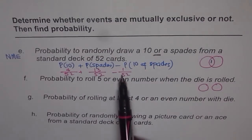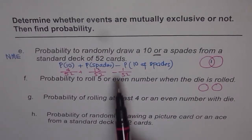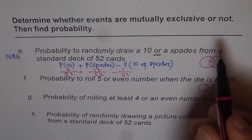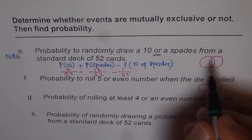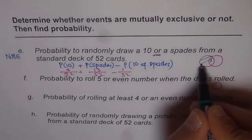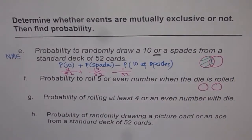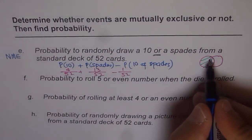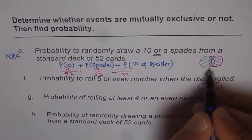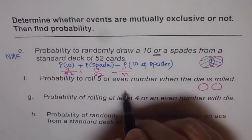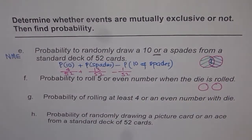Whenever we have an event which is not mutually exclusive, there are some common elements and we have to take away those common elements. The reason is: when you add event A, you have already included the common element. Now if you add event B, you are counting that common element again. Therefore, it is necessary to subtract it once. That is the reason we use the inclusion-exclusion formula.